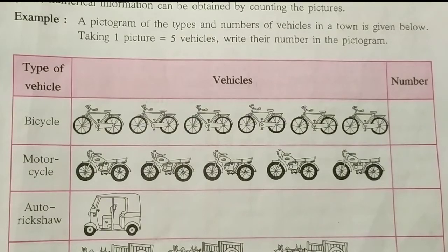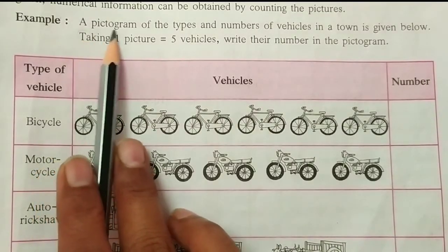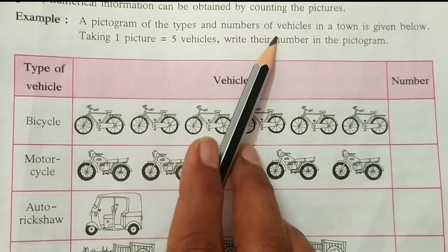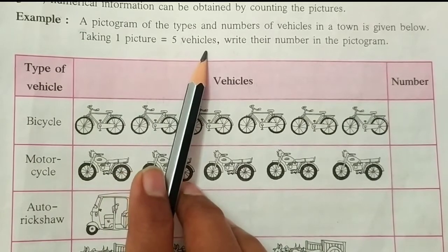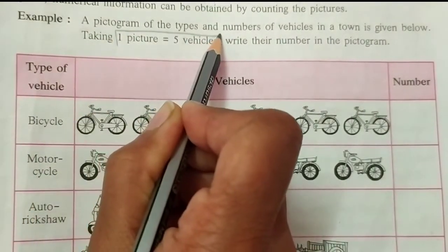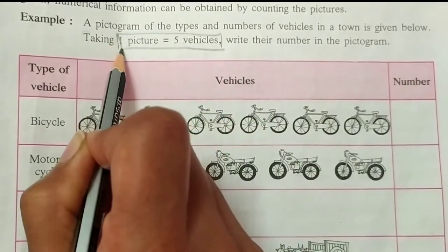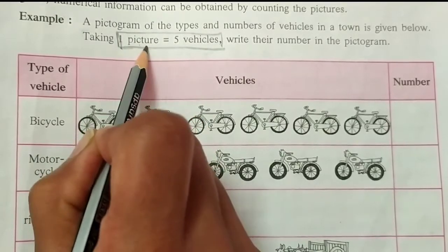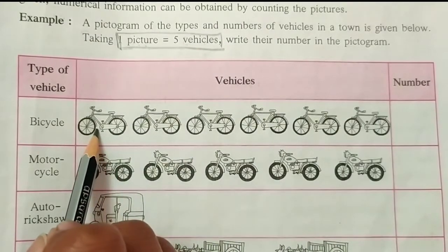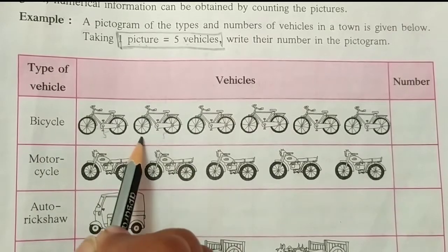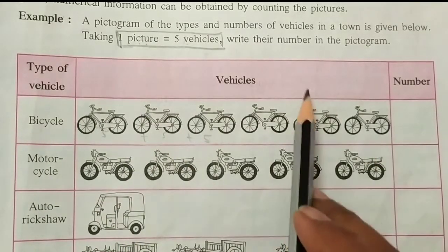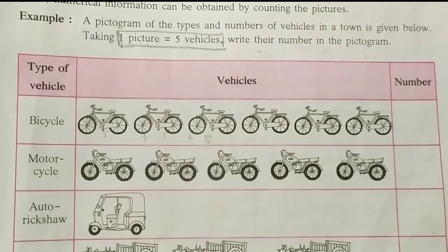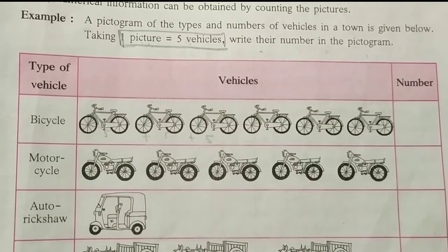Now look at the next picture. This is a pictograph — we learnt about pictographs in the last standard. A pictogram of the types and numbers of vehicles in a town is given. The scale tells us that one picture equals five vehicles. This scale is very important. So one picture of a cycle represents not one cycle, but five cycles — five plus five plus five, and so on. We have to write the number of vehicles in the given chart.